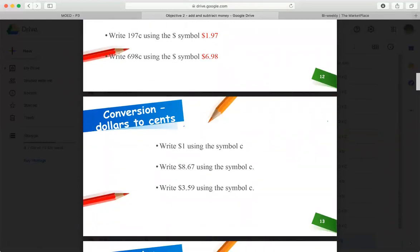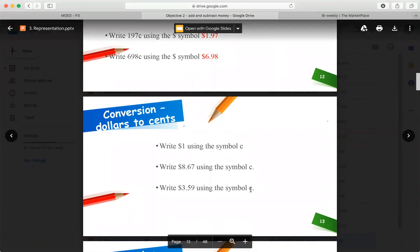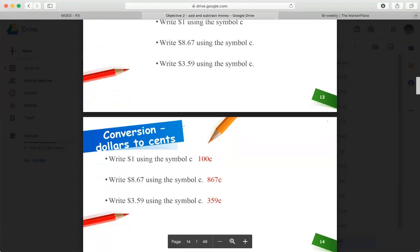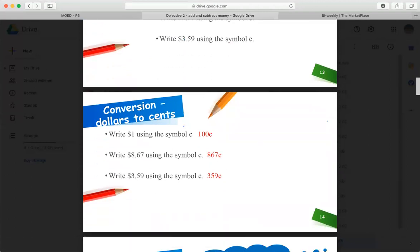Now, see if you can convert these dollars into cents. All right. Well, we already said $1.00 would be how many cents? $100. What would $8.67 be if we were just putting it in cents? And $3.59. So that's how you would convert dollars to cents. $100, $8.67, and $359. But you know, we usually use this more when we're talking about money.